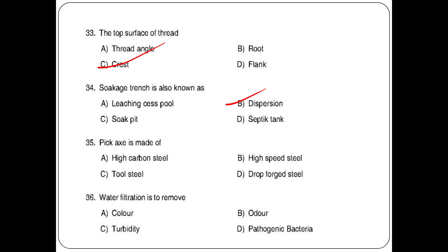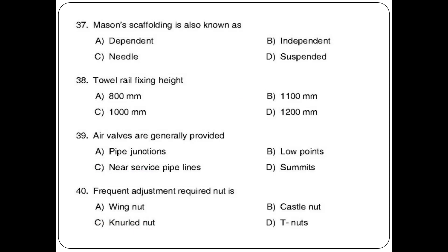Drop forged steel — the answer is option C: tool steel. Water filtration is used to remove color, odor, turbidity, and pathogenic bacteria. The answer is option C: turbidity removal.